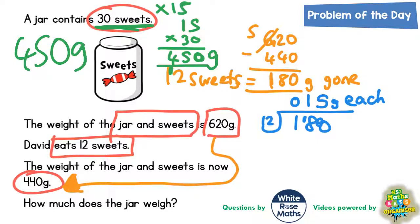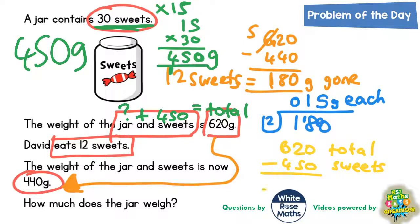But we get told that the weight of the jar and the sweets is 620. So if just the sweets are 450, but the total is 620, then the jar added to 450 must equal the total of 620. So if we subtract the 450 from 620, so 620 is the total, and the 450 is the sweets, whatever's left must be the jar.